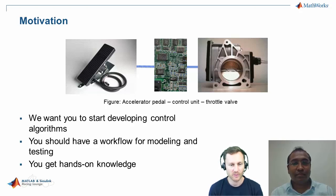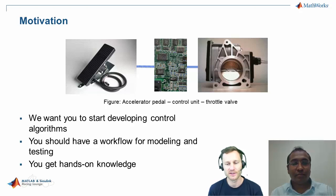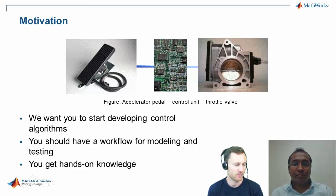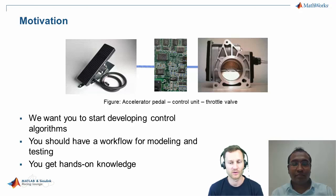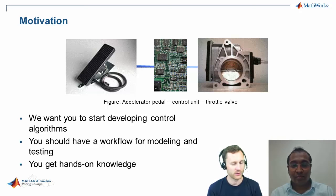We have chosen a throttle valve because that's inherent in all of your cars. I've seen at Formula Student India in January some teams thinking about that. Basically it's a nice example, but it's not the only example you can think of. There are a lot of control systems on your car. We just picked the throttle because it's relevant, but it's not excluding any others. We can dive into the topic right away, Naga.